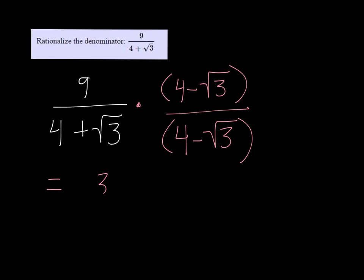So on top I'm going to get 36 minus 9 root 3. And on the bottom, actually I take that back, let's leave the top just as 9 times 4 minus the square root of 3.